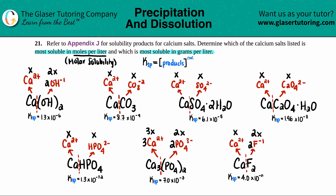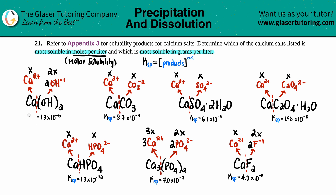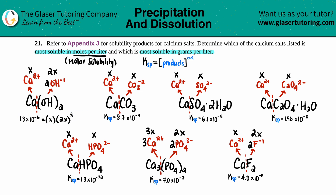Now we write Ksp expressions — products raised to their coefficients. For calcium hydroxide: Ksp equals [Ca²⁺]¹ times [OH⁻]², which gives x times (2x)², so Ksp equals 4x³. We do the same for all seven salts.